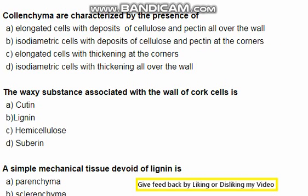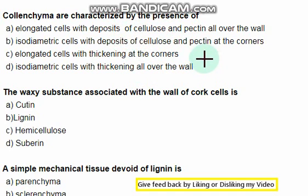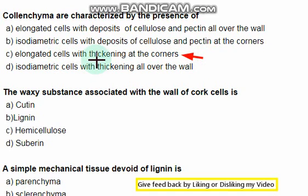Collenchyma are characterized by the presence of — the right option is option C: elongated cells with thickening at corners.